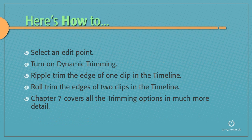In this session, I want to select an edit point, show you how to turn on dynamic trimming, ripple trim the edge of one clip in the timeline, and roll trim the edges of two clips in the timeline. Chapter 7 covers all the trimming options, including slip and slide, in much more detail.